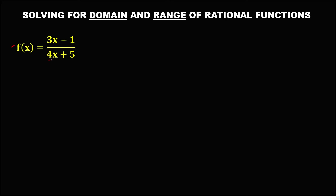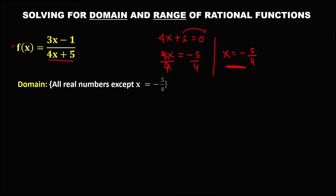For this given, to find the domain, equate the denominator to 0. So we have 4x plus 5 equals 0. Then to solve for x, transpose this positive 5. So 4x equals negative 5. Then divide both sides by positive 4. So we have x equals negative 5 over 4. So the domain is all real numbers except x equals negative 5 over 4, or x is an element of real numbers such that x is not equal to negative 5 over 4.